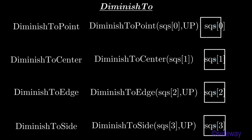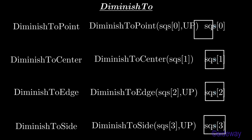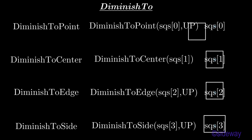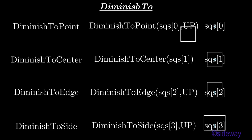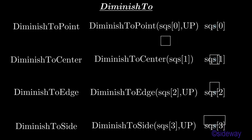DiminishToPoint method is used to diminish a mathematical object at a specified point animatedly. DiminishToCenter method is used to diminish a mathematical object at center animatedly.